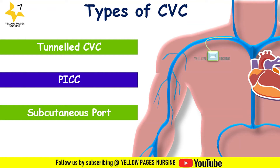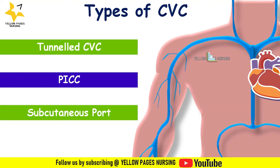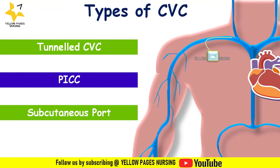In children, umbilical catheters are used — vascular catheters inserted through the umbilical artery or vein in a neonate. All umbilical catheters are considered central lines or central venous catheters.